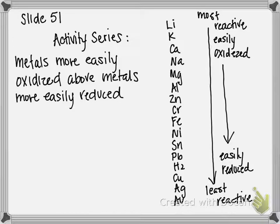The most reactive metals are on top, least reactive are on the bottom, because typically metals like to lose electrons, they like to be oxidized. So at the top of the list, these metals are easily oxidized, and at the bottom of the list, those metals are most easily reduced, or least easily oxidized.